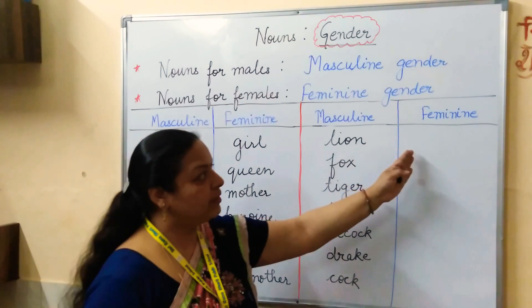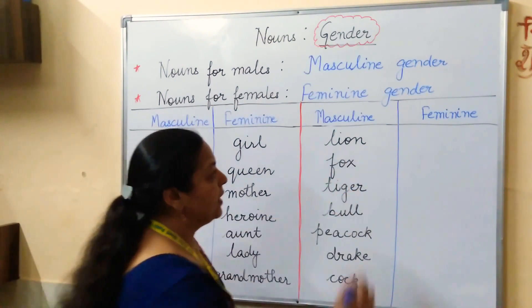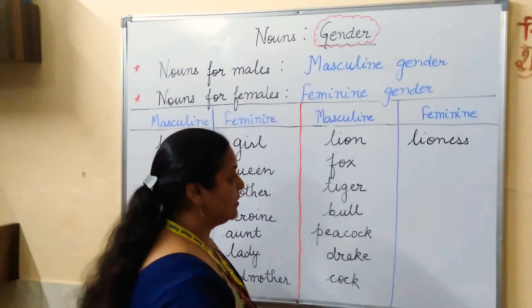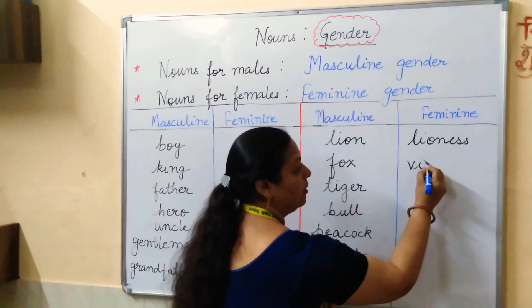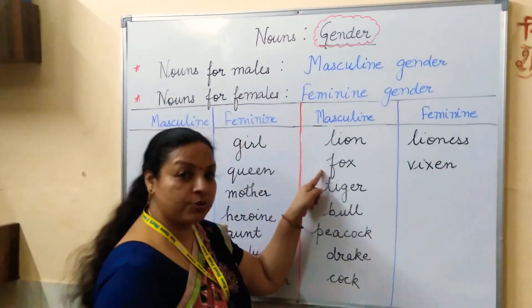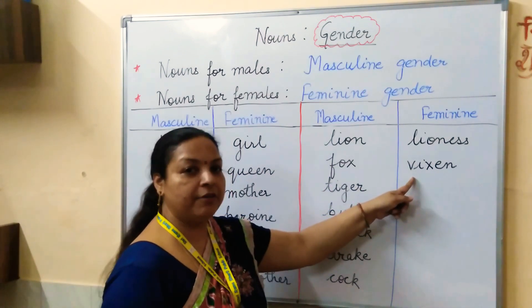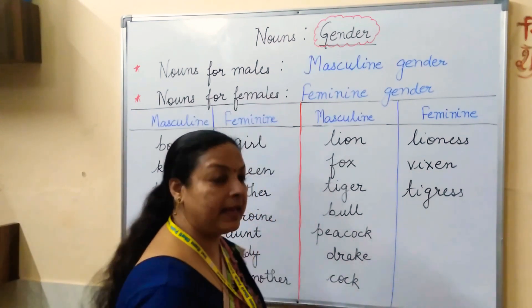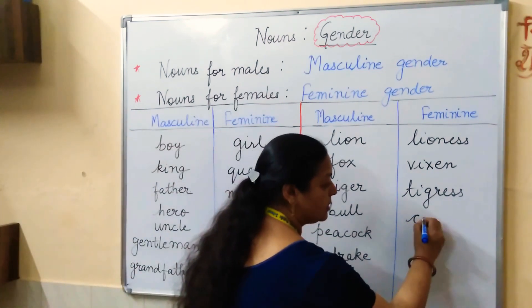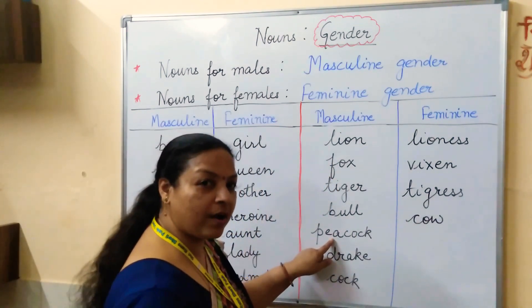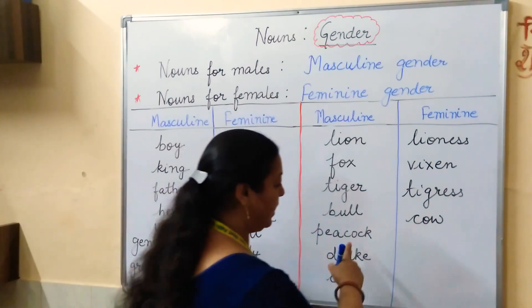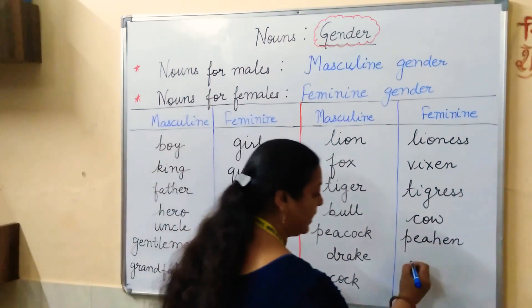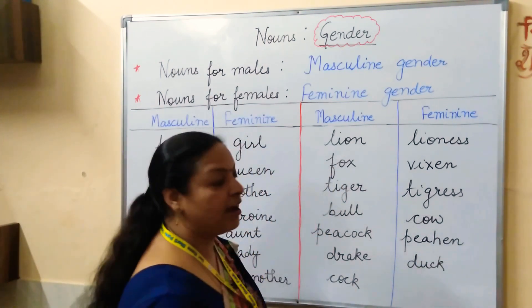Now let's see their feminine gender. For lion, we write lioness. For fox, we write vixen — fox is masculine and vixen is feminine. Tiger's feminine gender is tigress. For bull, we write cow. Peacock is male, so the female is peahen. For drake, the feminine gender is duck.